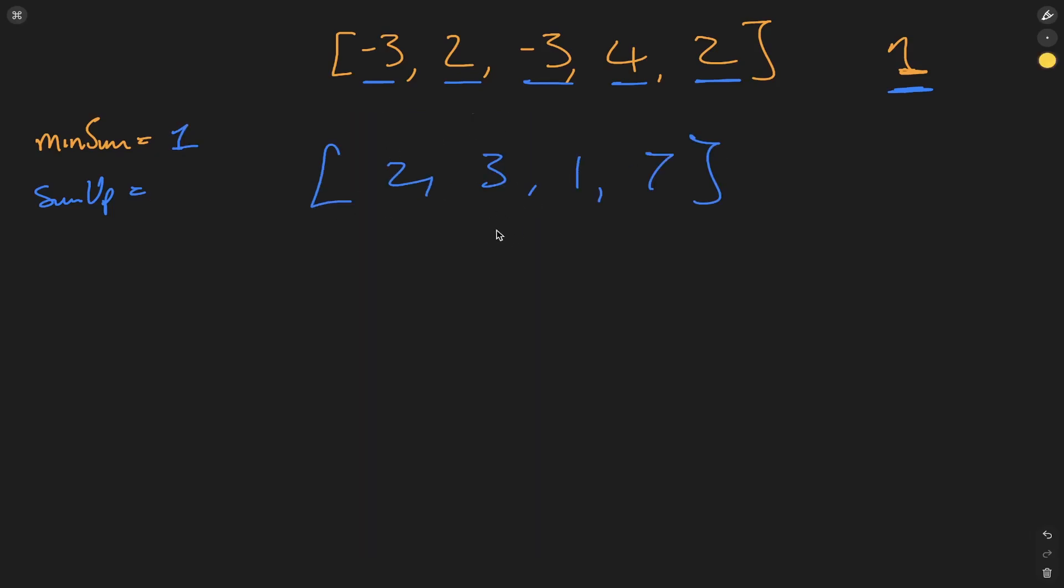What happens if we have an array that's all positive? Let's walk through it. If we sum this up, we initially get two for the sum. Minimum sum stays as one. SumUp goes to five when we're at three. Minimum sum stays as one. Then at one, we update sumUp to six. Minimum sum stays as one. Finally, at seven, we add seven to six to get 13. Minimum sum stays as one, so we can just return minimum sum.